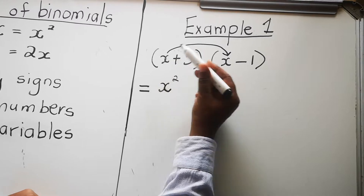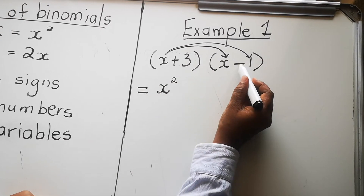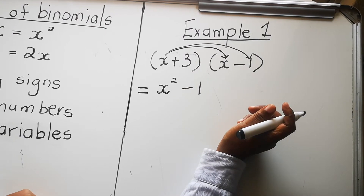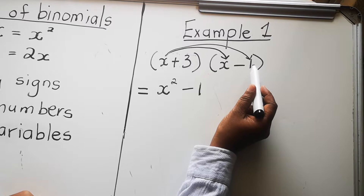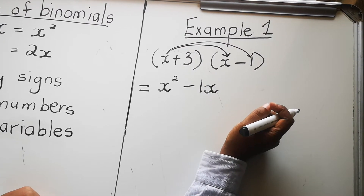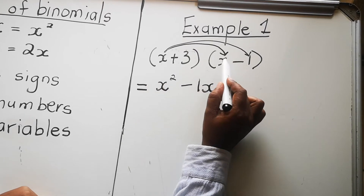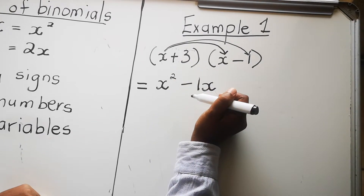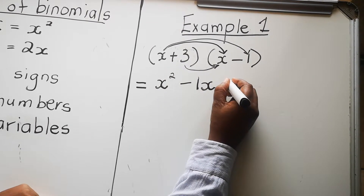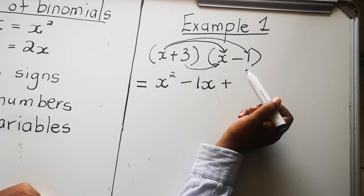Now multiply the first term with the second term in the second binomial. Apply the rules again: sign first — positive times negative is negative. Numbers — one times one is one. Variables — you have x and no other variable, so you write x. That completes multiplying the first term with both terms in the second binomial. Now go to the second term: multiply that with the first term of the second binomial. Sign — positive times positive is positive.